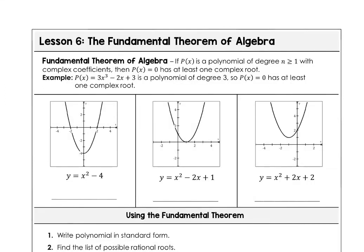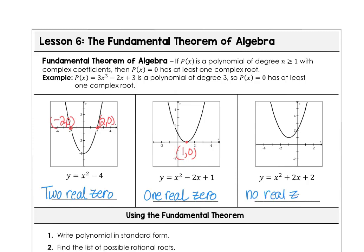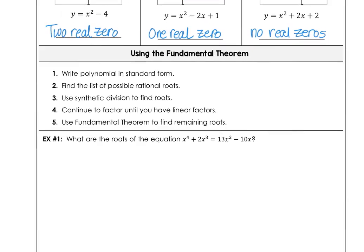Today's lesson, Lesson 6, is all about the Fundamental Theorem of Algebra. It basically says that whenever we have a polynomial of degree one or greater, when you set the equation equal to zero, you're going to have at least one complex root. In our three pictures of quadratics, the first shows two real zeros, the middle shows one real zero with multiplicity two, and the right example has no real zeros — those would be imaginary because the graph does not touch or cross the x-axis.